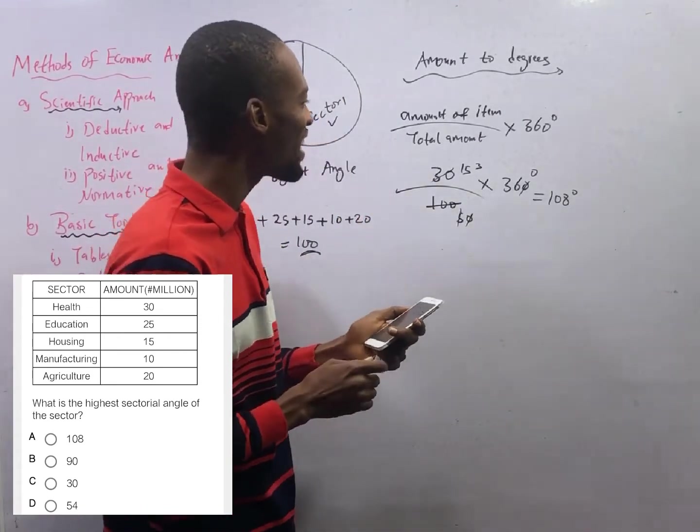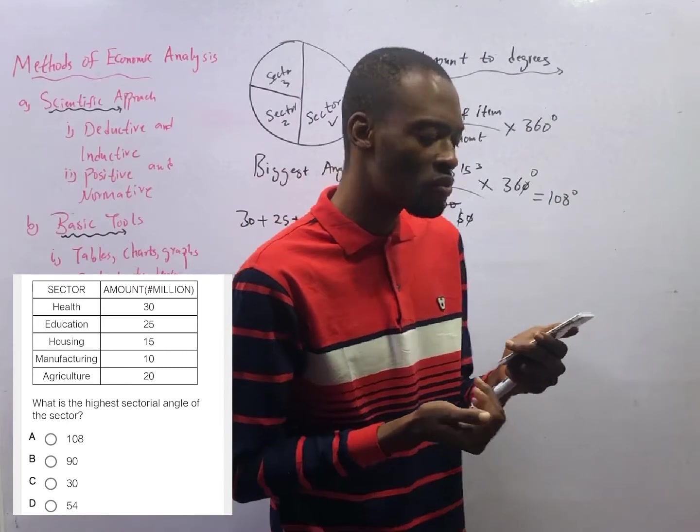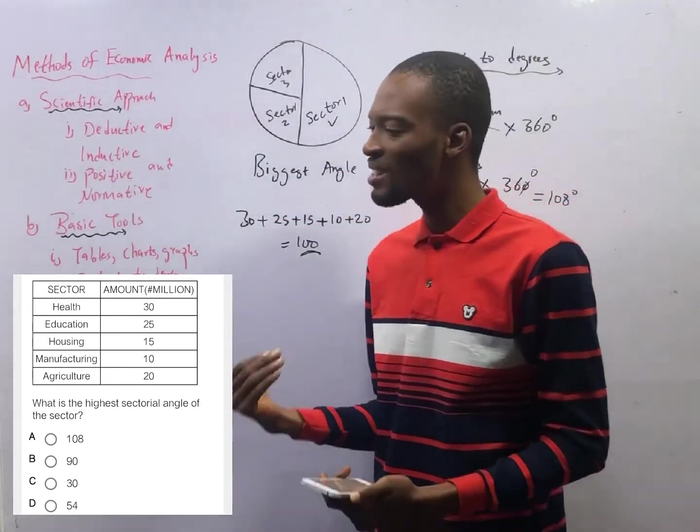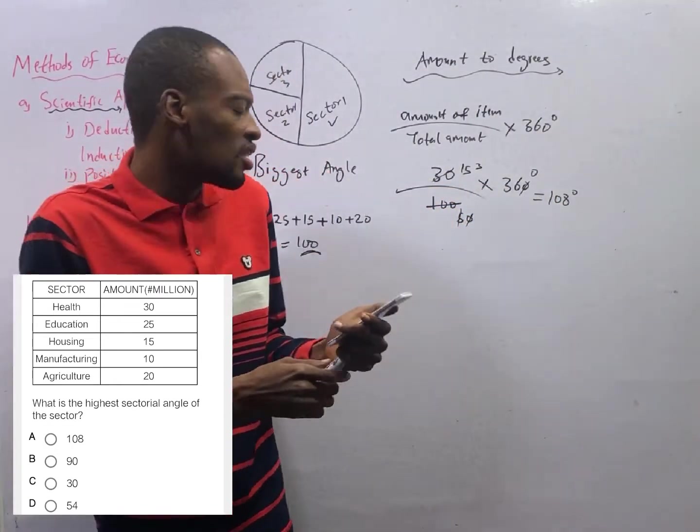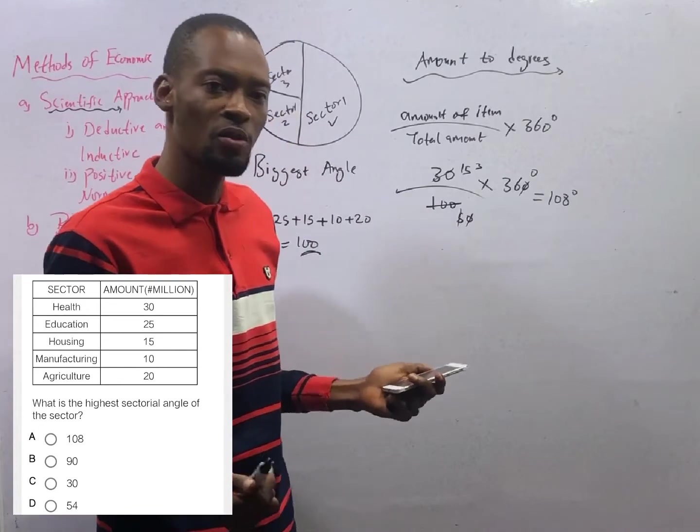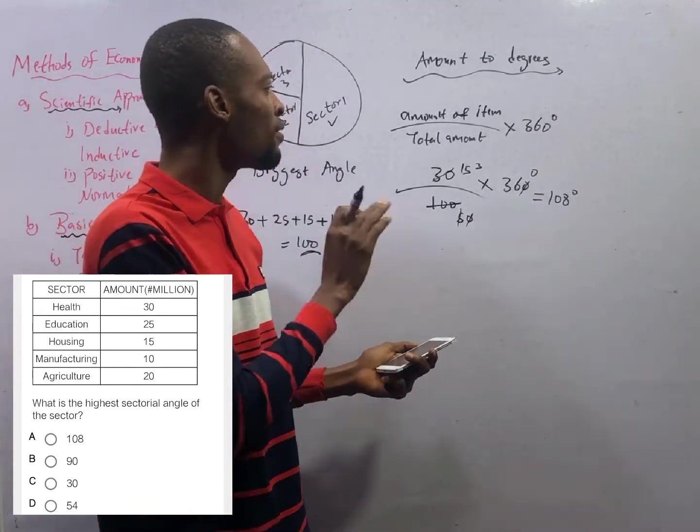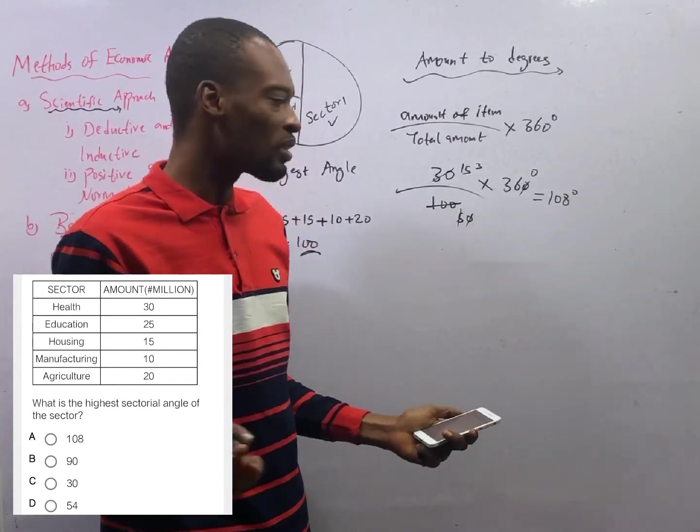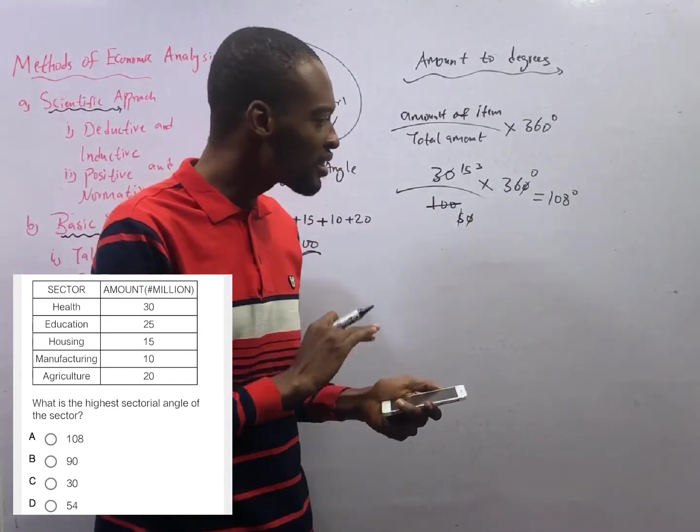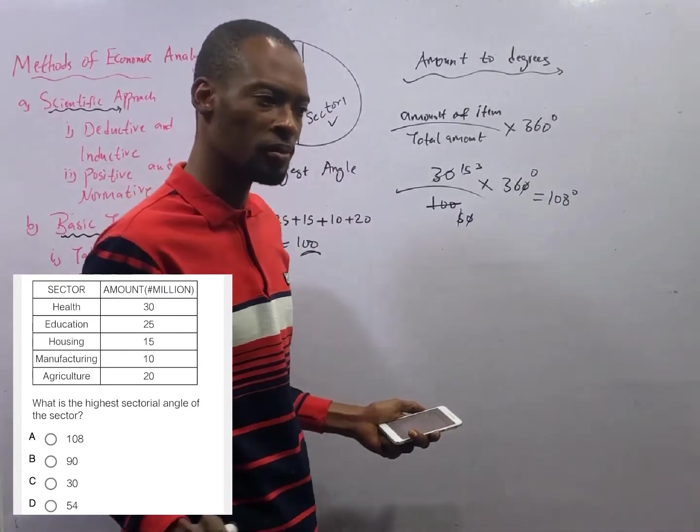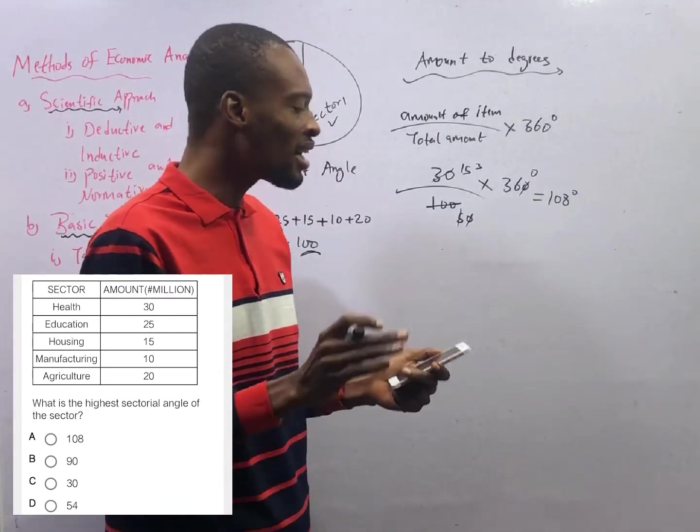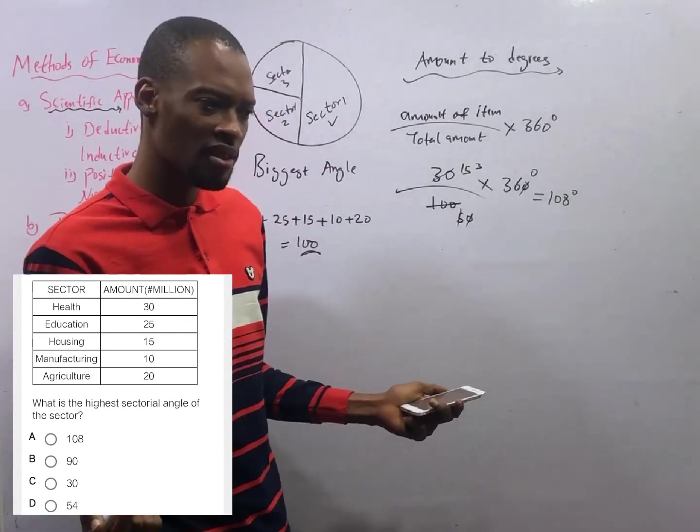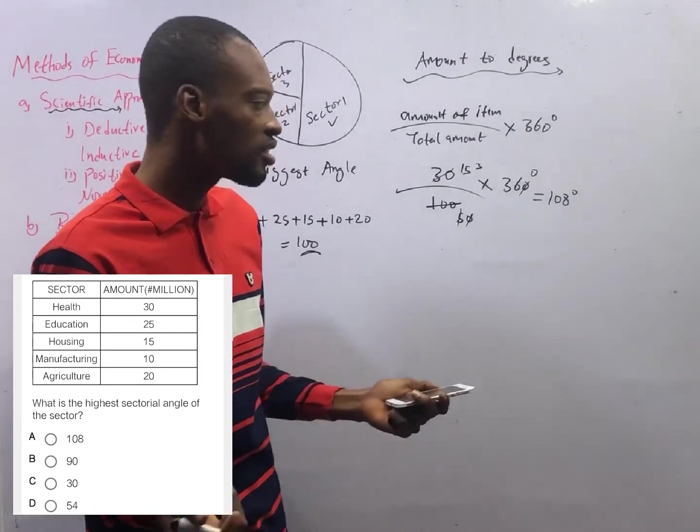Since health carries the highest amount, health will simply have the highest sectoral angle. It is very obvious health will carry the biggest angle. But let's solve for the other sectors, which isn't necessary in this type of question. The biggest amount will carry the biggest angle, so you just look for the biggest amount, check the angle, then look for the option.